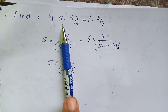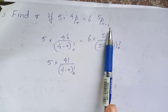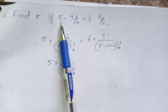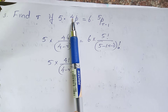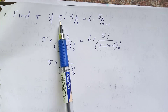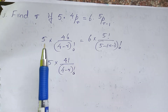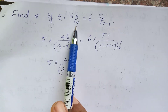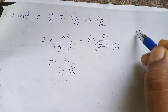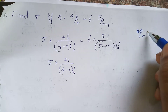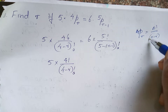Find r if 5 into 4Pᵣ equals 6 into 5Pᵣ₋₁. We are going to work with 5 into 4Pᵣ. The formula for nPr is n factorial divided by (n minus r) factorial.